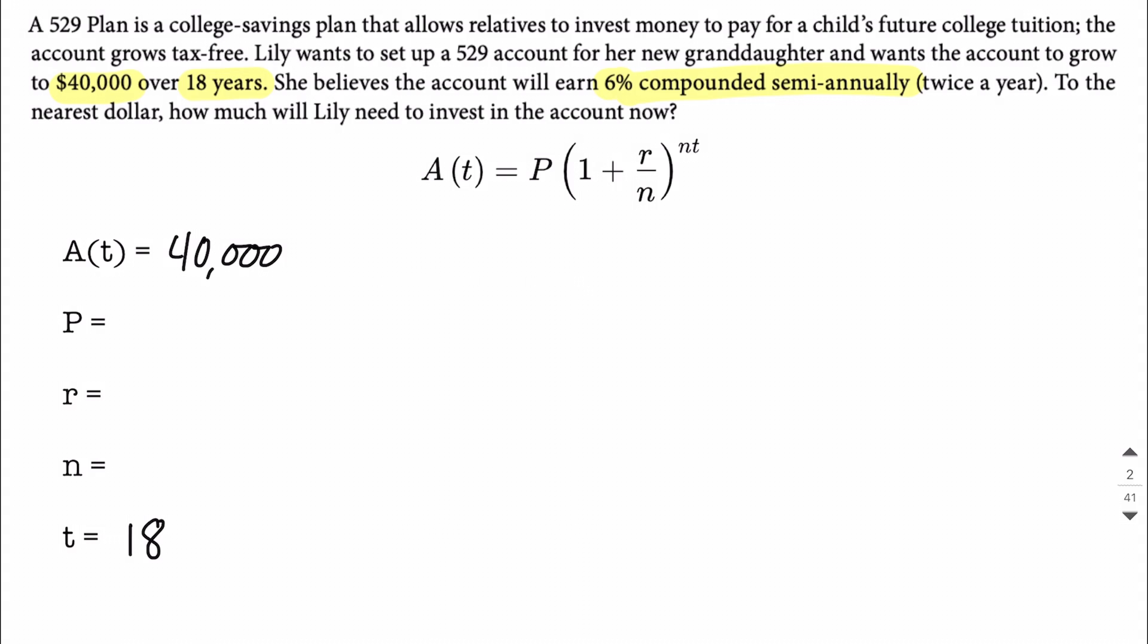P is what the account's worth right now. So we don't know what the account's worth right now. That's going to be however much she invests, so we don't know what P is. R is the rate, usually given as a percentage initially.